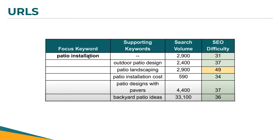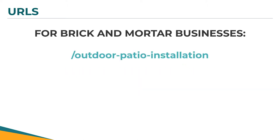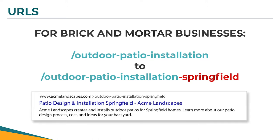Patio installation is the main keyword for that page, but 'outdoor patio design' gets quite a bit of searches, so you can mix and match and have more than just your focus keyword. For local businesses, there's one more element to add: just include the city, neighborhood, or state you're trying to rank in. In this case, if they want to show up in Springfield, they could optimize the URL as 'outdoor-patio-installation-springfield.' Your URLs actually have a really significant impact on that page's rankability.